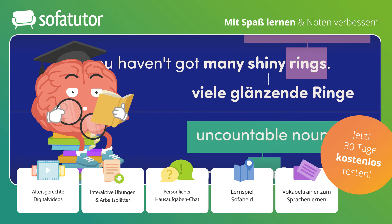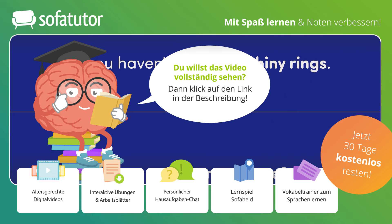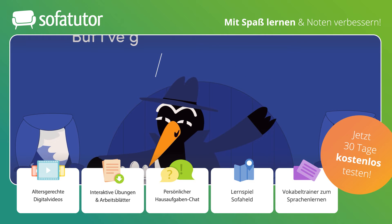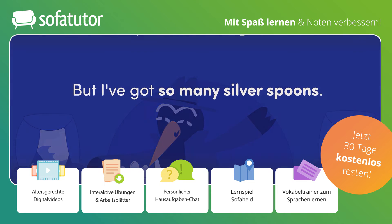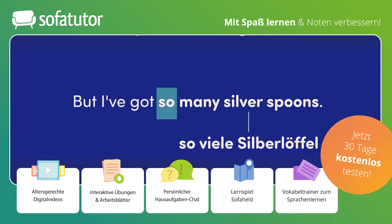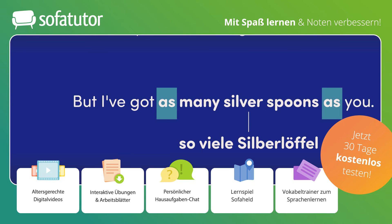Beide Quantifier bedeuten das gleiche. Schauen wir uns an, in welchen Sätzen 'much' und 'many' verwendet werden. Beim ersten Satz handelt es sich um eine negative Aussage, der zweite ist eine Frage. Beide Quantifier werden vor allem in diesen Sätzen verwendet. In positiven Aussagesätzen stehen 'much' und 'many' üblicherweise nur nach 'so' (so many silver spoons), 'too' (too many silver spoons) oder zwischen zwei 'as' (as many silver spoons as you).